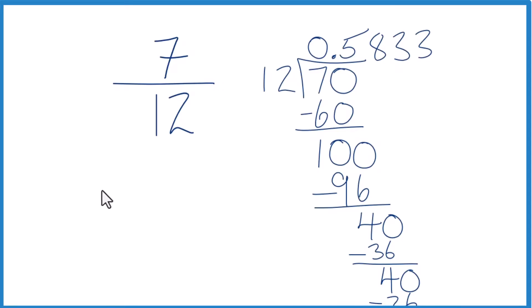And the 3s keep repeating. So we could write that like this, 0.583, and just put a bar over the 3 to show that it keeps repeating.